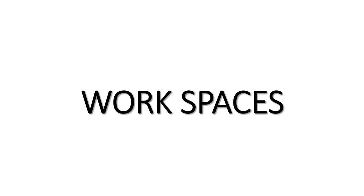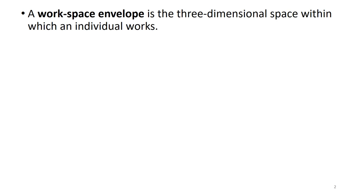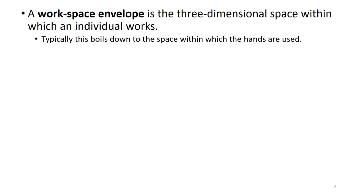Let us continue our discussion from the last class. Today we will look into what is meant by workspace and what are the recommendations needed for different activities. First we will look into what is meant by workspace or a work envelope. A workspace envelope is a three-dimensional space within which an individual works. In simple terms, this is a space within which the hands are used. If you are an operator working in a control room, the area which your hands cover is generally your workspace or workspace envelope.